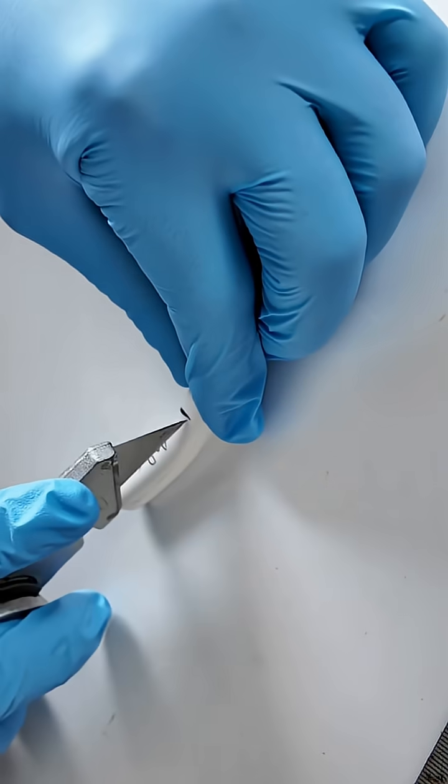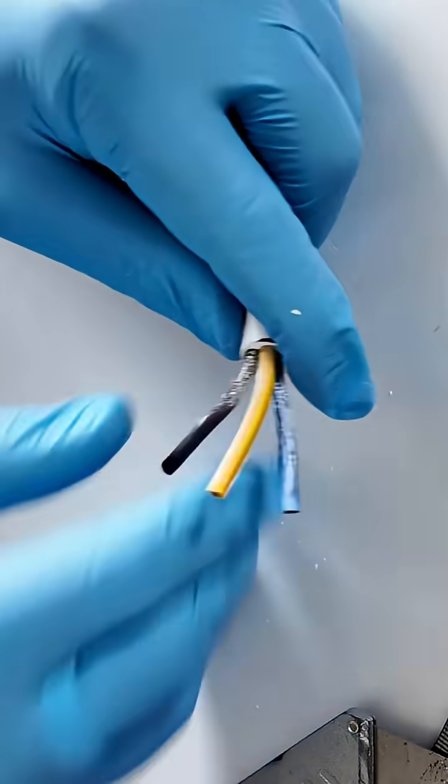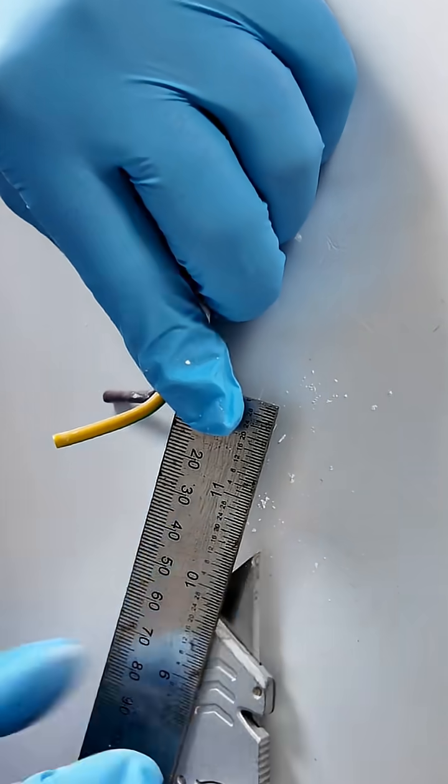Unscrew the plug. Remove the central screw and open the plug casing. Prepare the cable by stripping about 32 mm of the outer insulation to reveal the three wires.